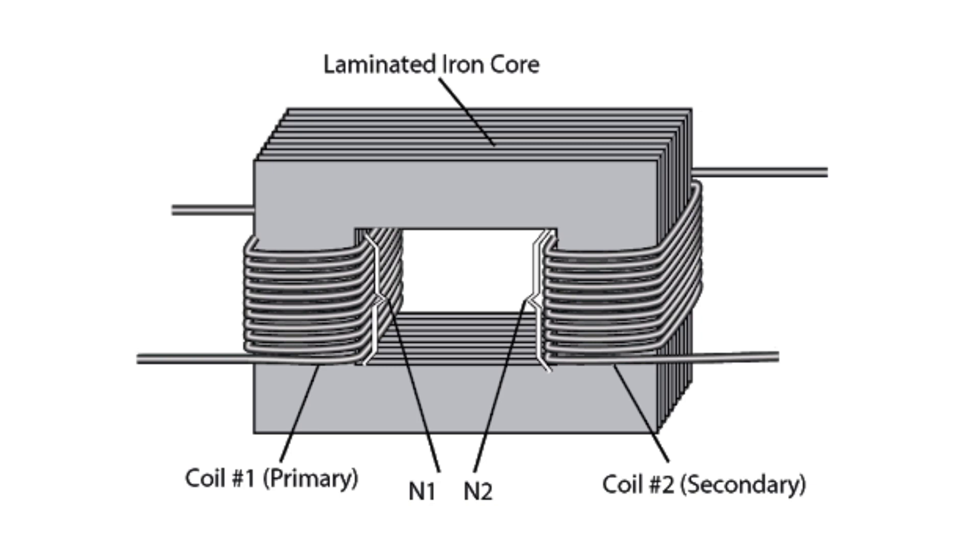We will connect the primary winding to the input AC voltage supply, and we will connect the load at the secondary winding. As we described before, in AC circuits, we have three types of power: active power,